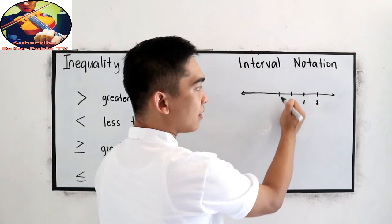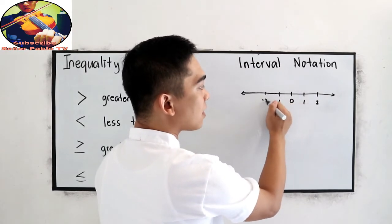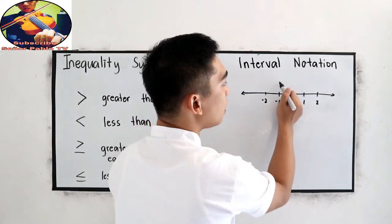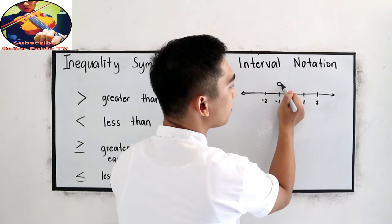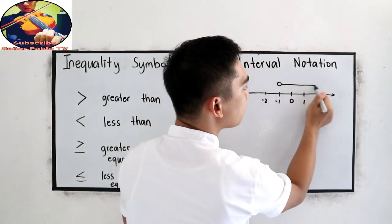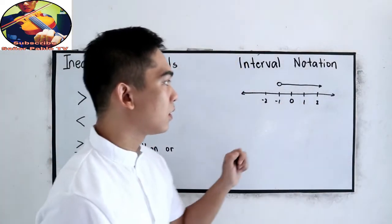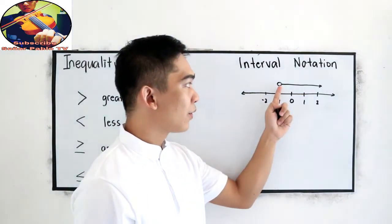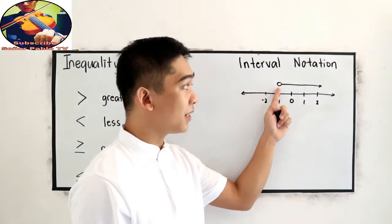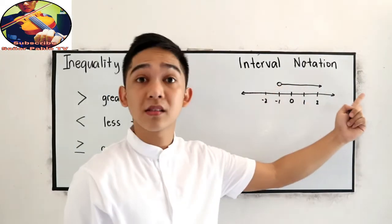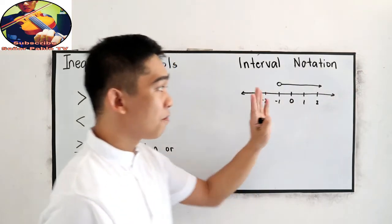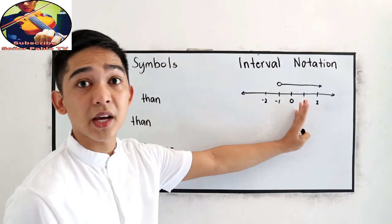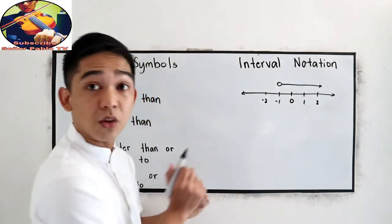We're going to use the number line to test our final answer. Let's say in our final answer, we have this output. At negative 1, we have a hollow or open circle, then going to positive infinity. Before we write that in interval form, let us first familiarize the different symbols we're going to use.